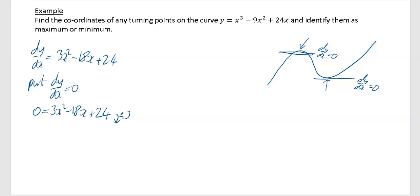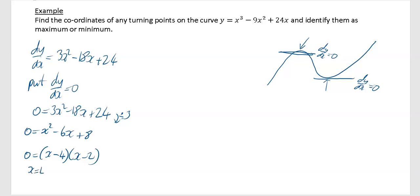Dividing through by 3 makes factorising much easier, giving x squared minus 6x plus 8. Using sum and product, that factorises to (x minus 4)(x minus 2). Setting each bracket equal to zero: x minus 4 equals 0 gives x equals 4, and x minus 2 equals 0 gives x equals 2. So those are our two x-values.